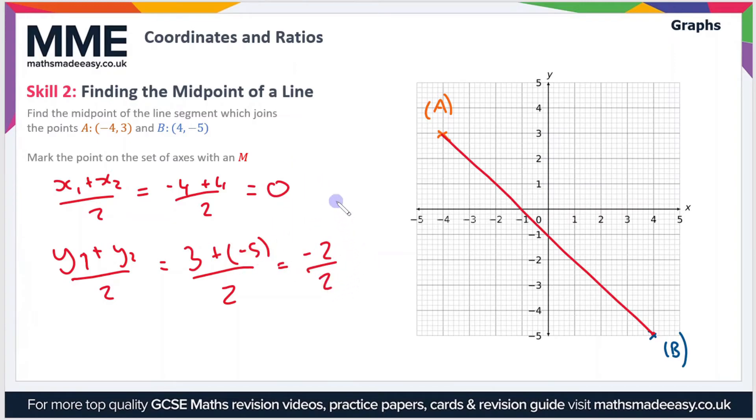3 plus -5 is -2, so -2 divided by 2 is -1. So therefore this is our x value, this is our y value, so our coordinate then M is the point (0, -1).